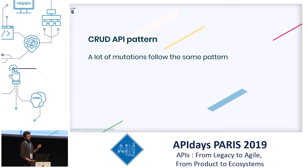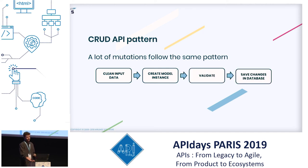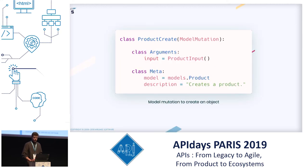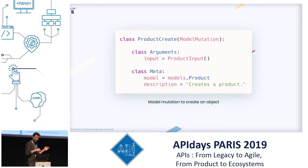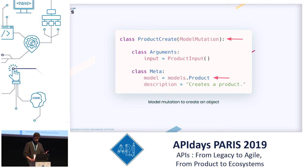We also have a lot of CRUD mutations, and they all follow the same pattern: clean input data, create a model instance, do some validation, and save to the database. We built an abstraction called ModelMutation for that. The implementation is complex so I've skipped it here — you can go to our GitHub to see how it works — but using it we can implement the same mutation in just a few lines of code, using the metaclass convention to tell it which model to use.